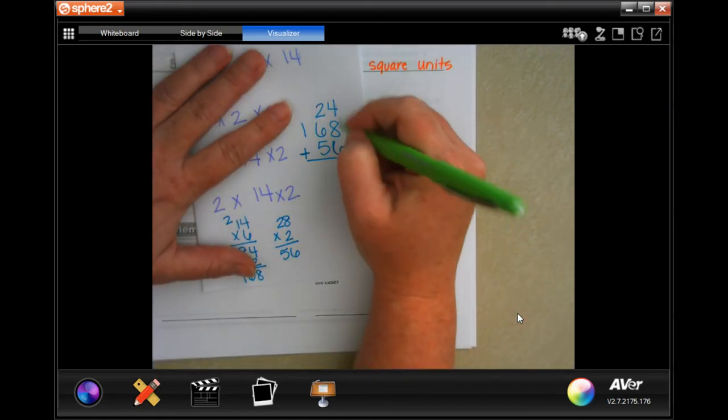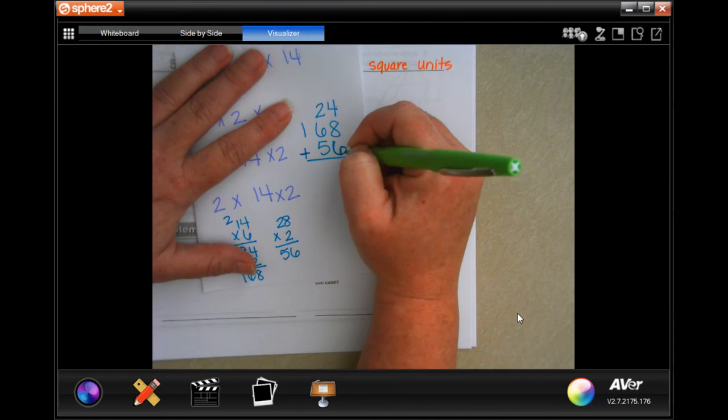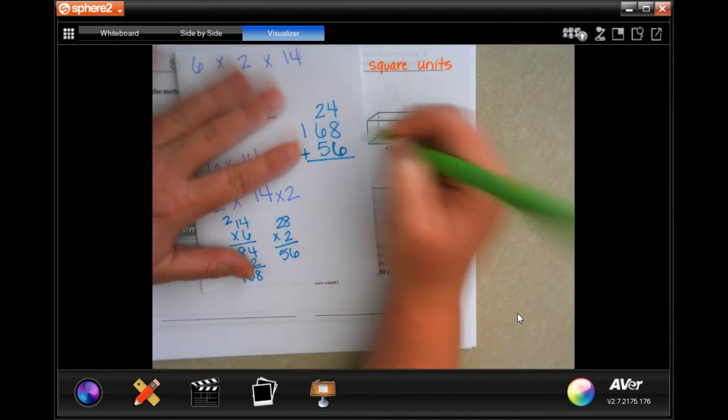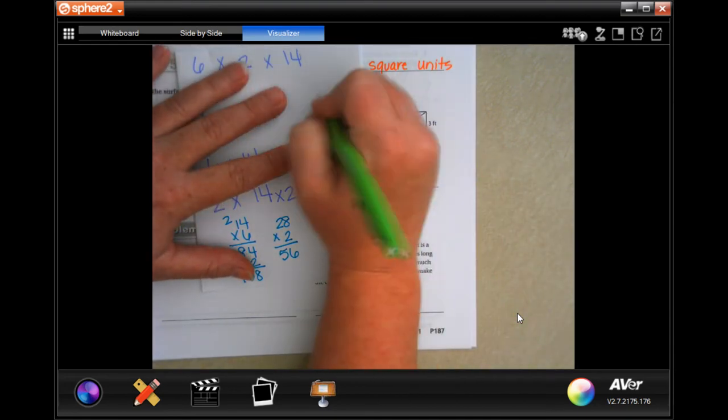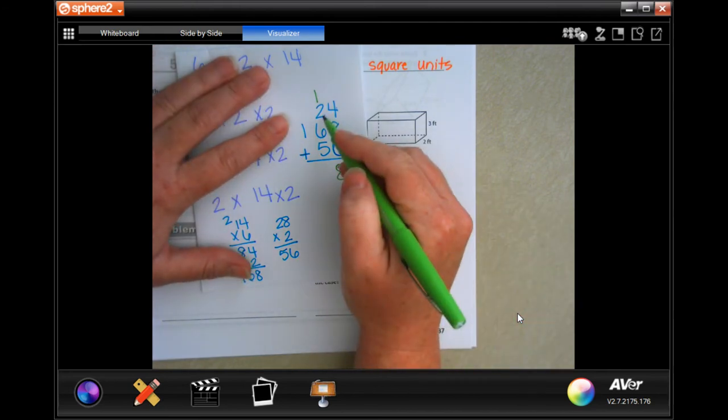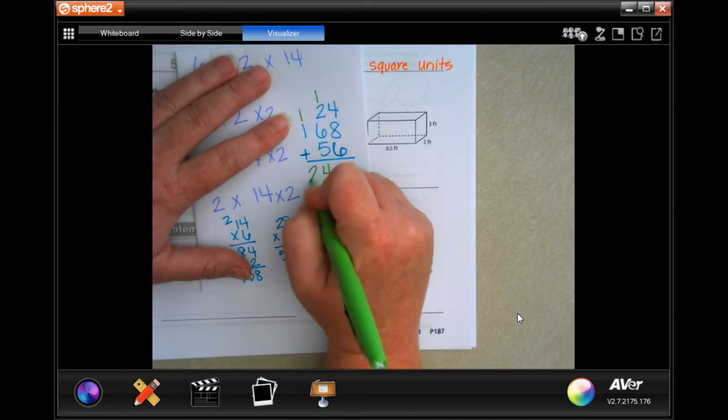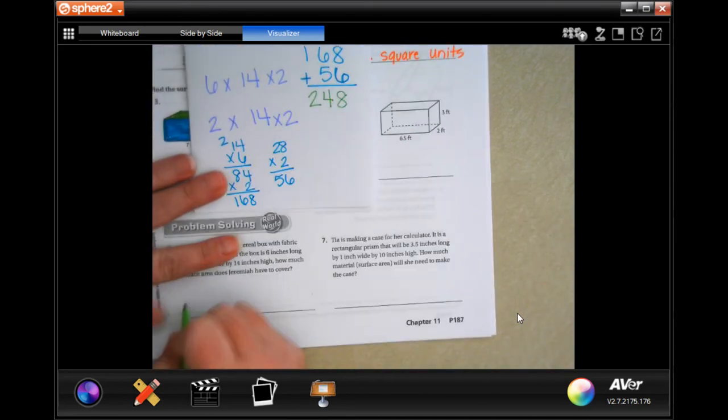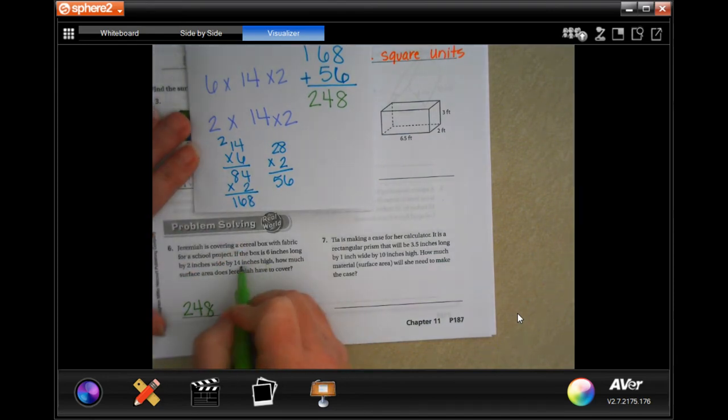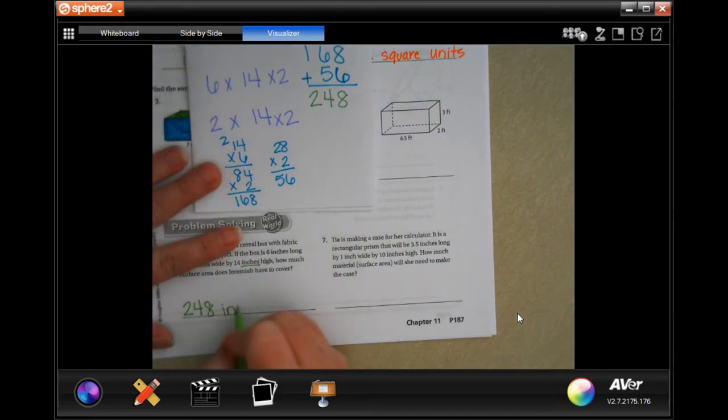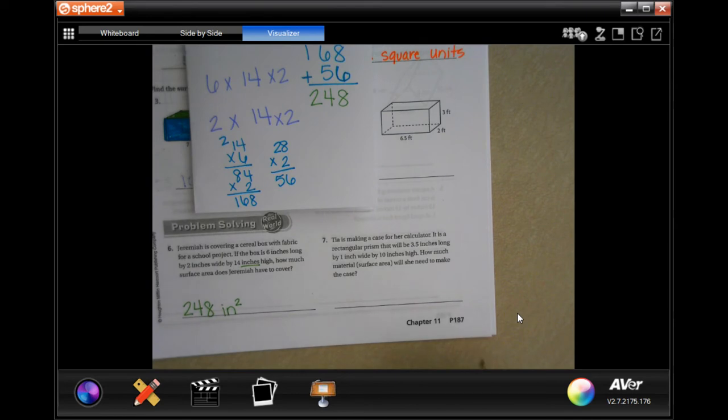So, four plus eight is 12. Plus six more. It's 18. Eight down. Carry the one. One plus two is three. Plus six is nine. Plus five is 14. Carry the one. And two. So, 248. It's in inches. And we multiply the inches by inches. So, it's inches squared.